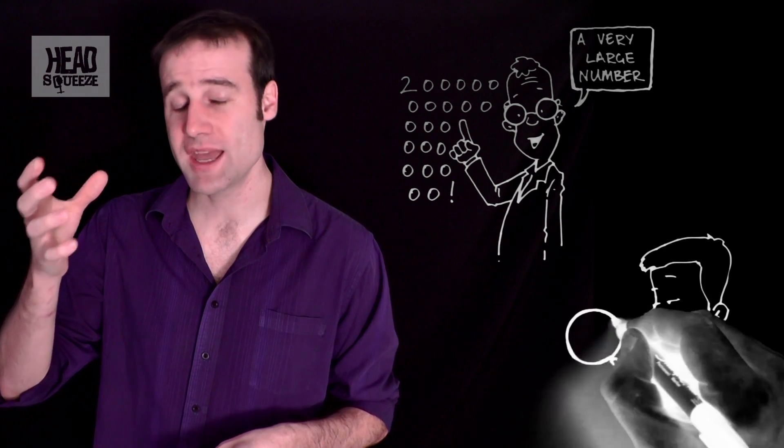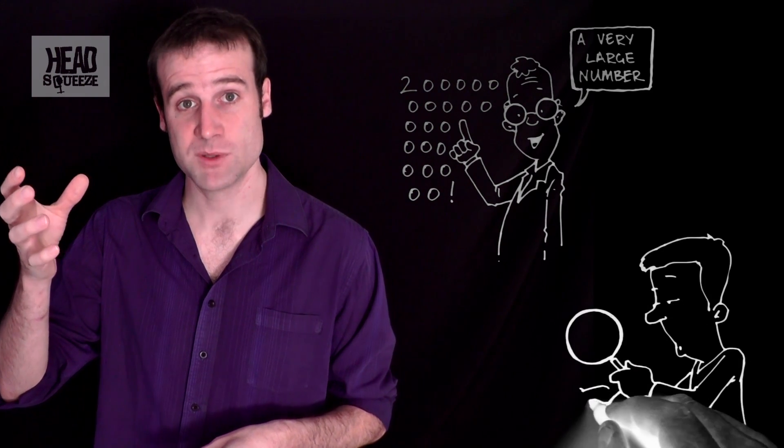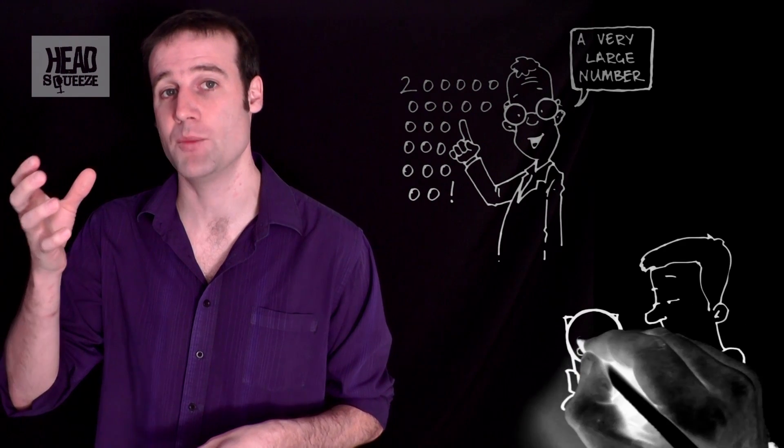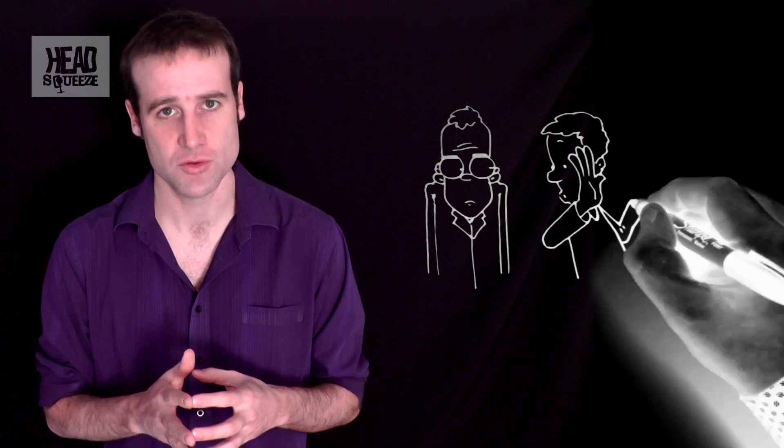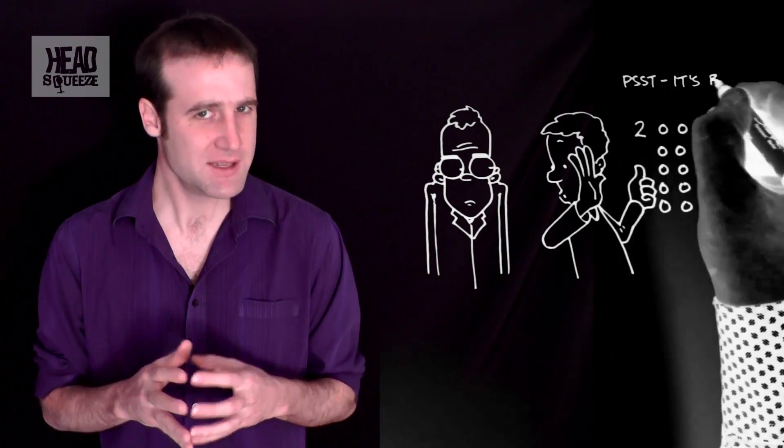And in there, you could count the number of molecules. So if you take a normal pint of water and work out how many molecules are in there, which I may have done, you end up with around about 2 times 10 to the 25. So that's 2 with 25 zeros. It's a bigger number.